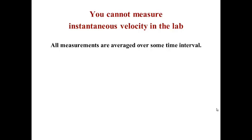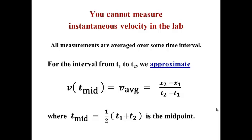You cannot measure instantaneous velocity — period. All measurements have to be averaged over some time interval. You can make it really, really tiny, but it cannot be made zero. That's calculus, not physics. And because we're always measuring over a finite time interval, we are always approximating the velocity when we measure it in the lab.